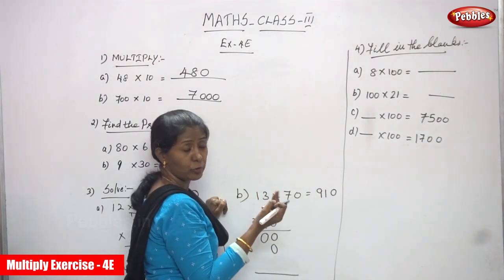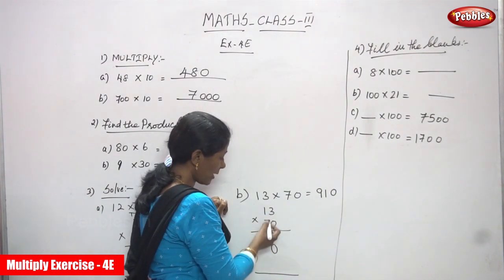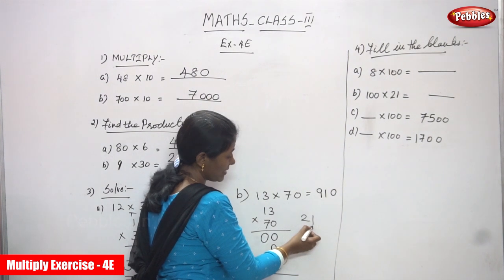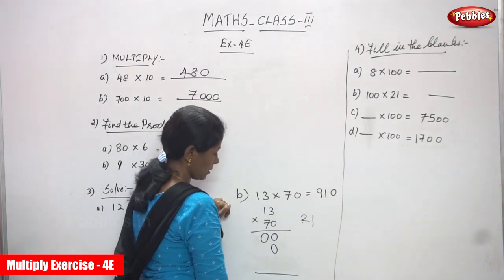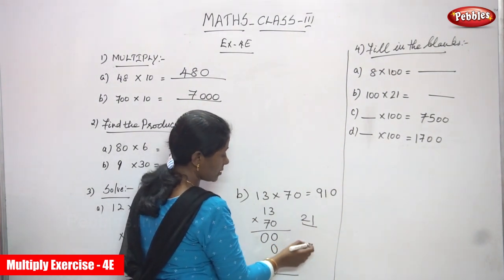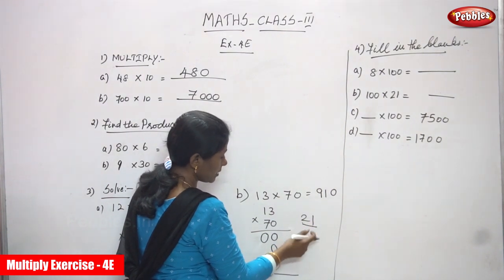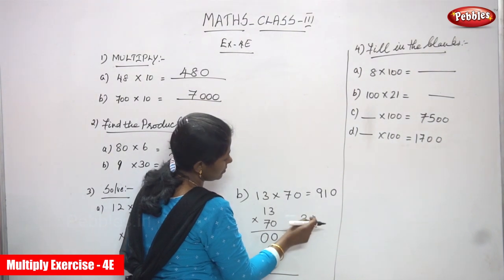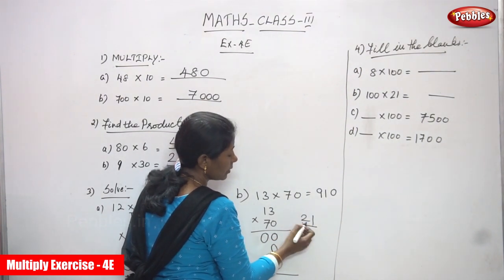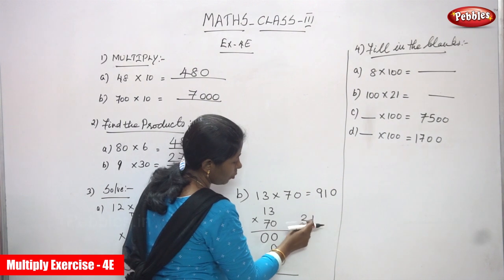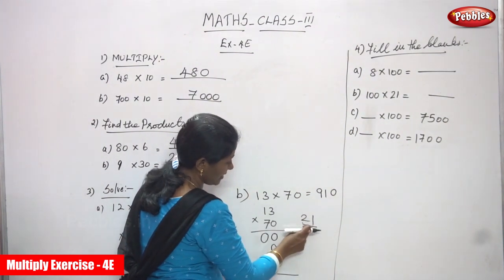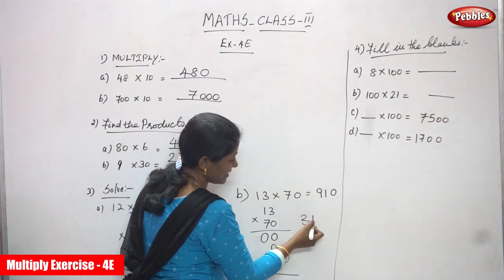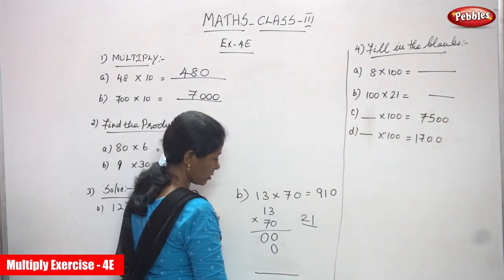7 threes are 21. So write 21 — that means 1 in the tens place and 2 carry over to hundreds. 21 tens means 1 ten and 2 hundreds. This is because you are multiplying by 7 tens.